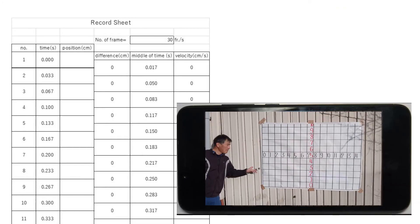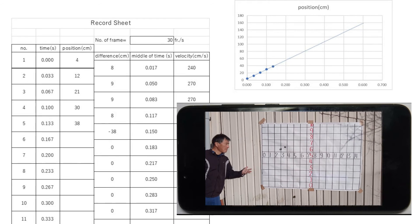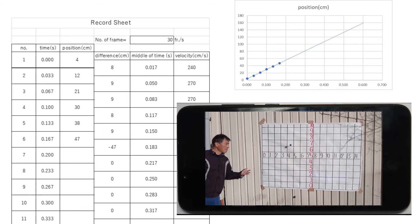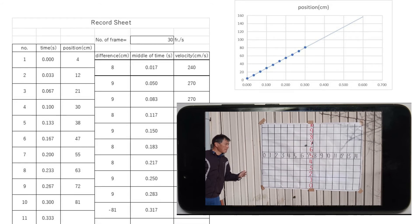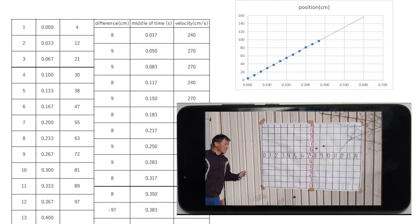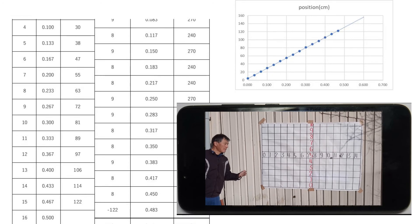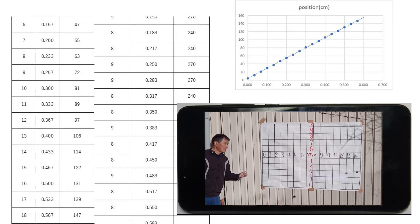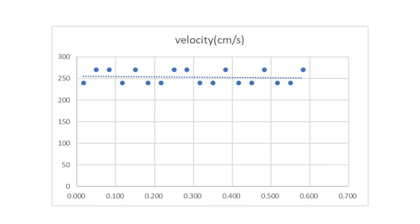The position of the ball for each frame is read and recorded. Calculation and the graph can be done at the same time. The position and time graph. Velocity and time graph.